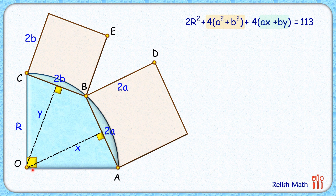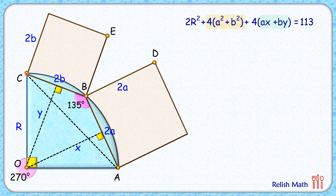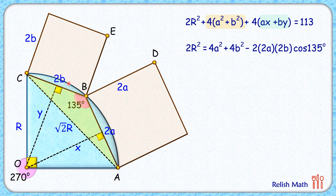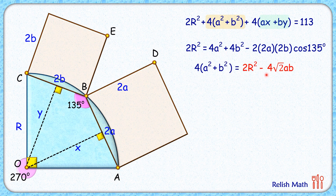To find 4a² + 4b², consider the exterior angle at point O, which is 270°. By the inscribed angle theorem, angle B equals half of that, or 135°. Joining CA, where OC = OA = r, gives CA = r√2 by the Pythagorean theorem. Applying the cosine law to triangle CBA: 2r² = (2a)² + (2b)² − 2(2a)(2b)cos135°. Substituting cos135° = −1/√2 and simplifying gives 4a² + 4b² = 2r² − 4√2·ab.